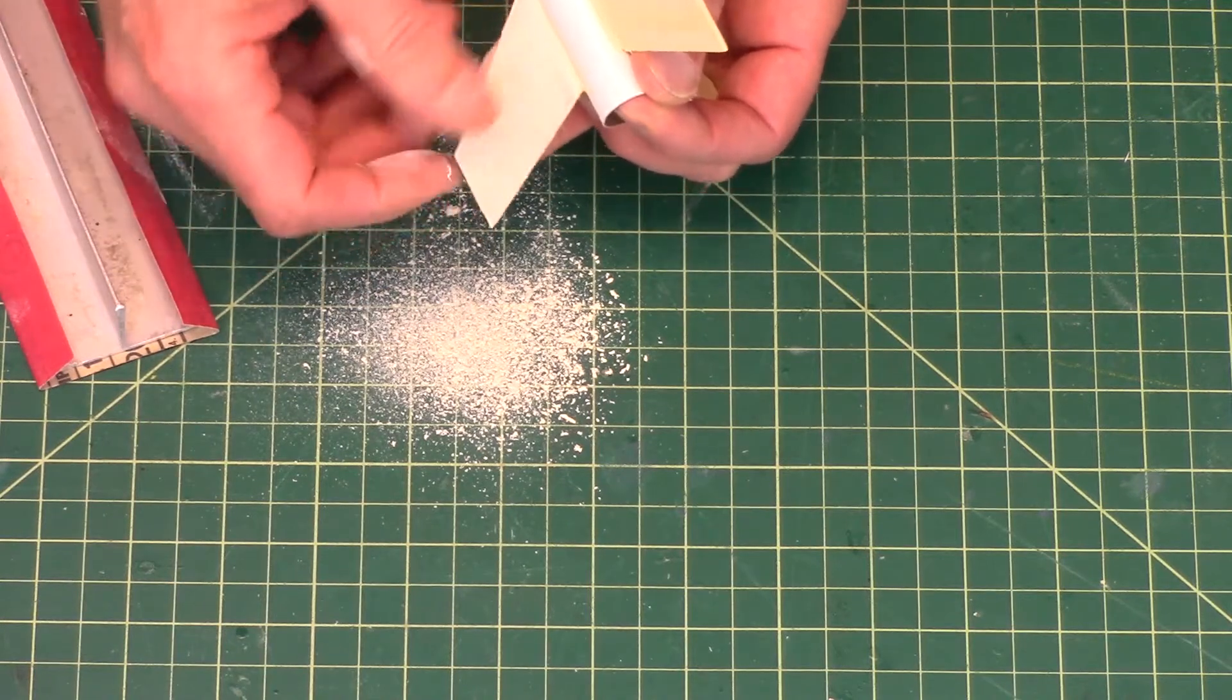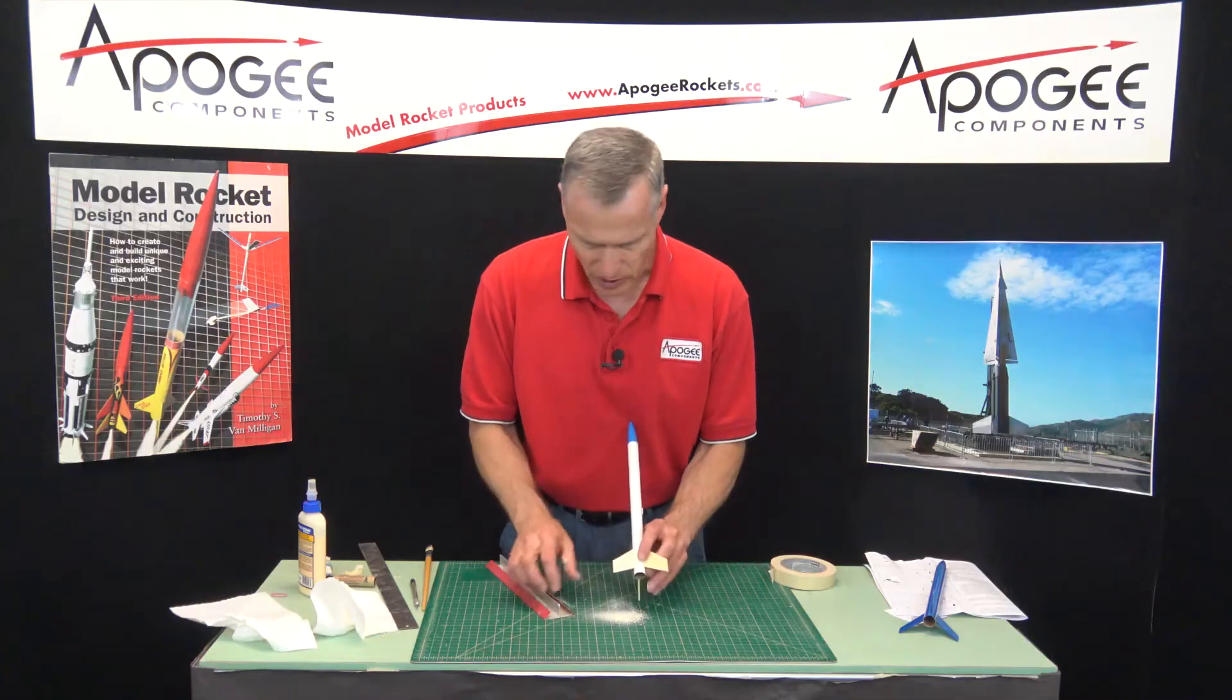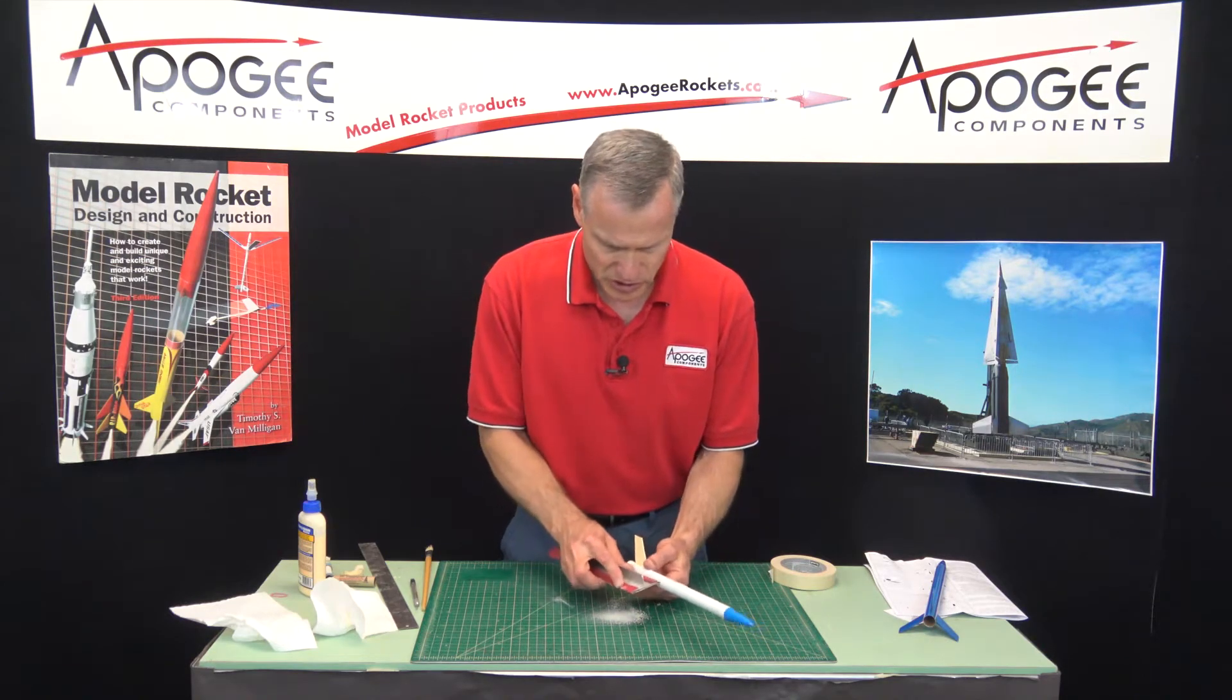And now that's a really smooth surface finish right there. I really like that. Just flip it over and then do the other side.